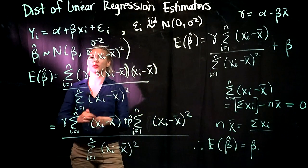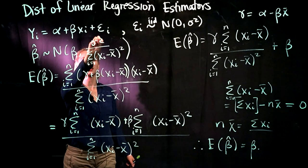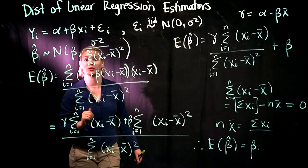So now we've shown that the expectation of beta hat is equal to beta. Next thing we're going to do is look at the variance of beta hat and see why it's normally distributed.